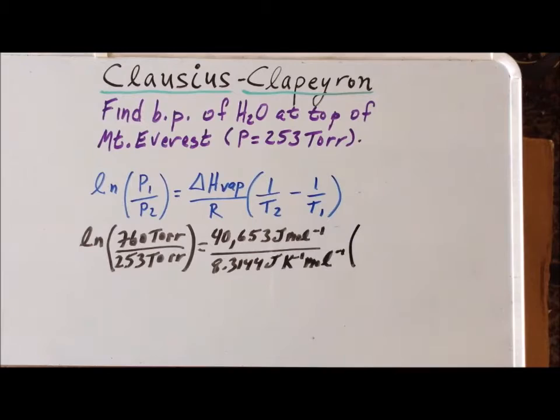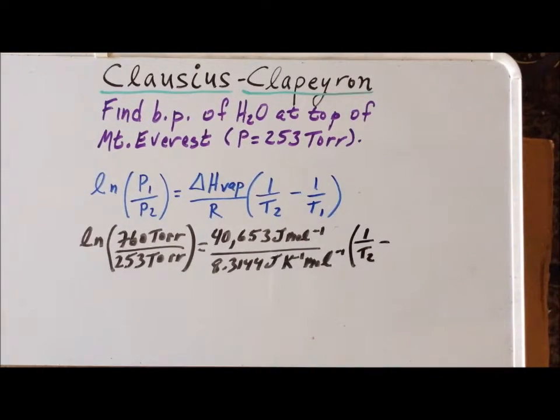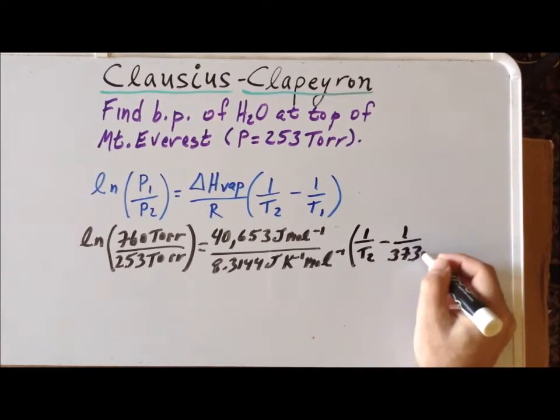T₂ is as yet unknown, so we have 1 over T₂, and we know that T₁ is 373.15 Kelvin.